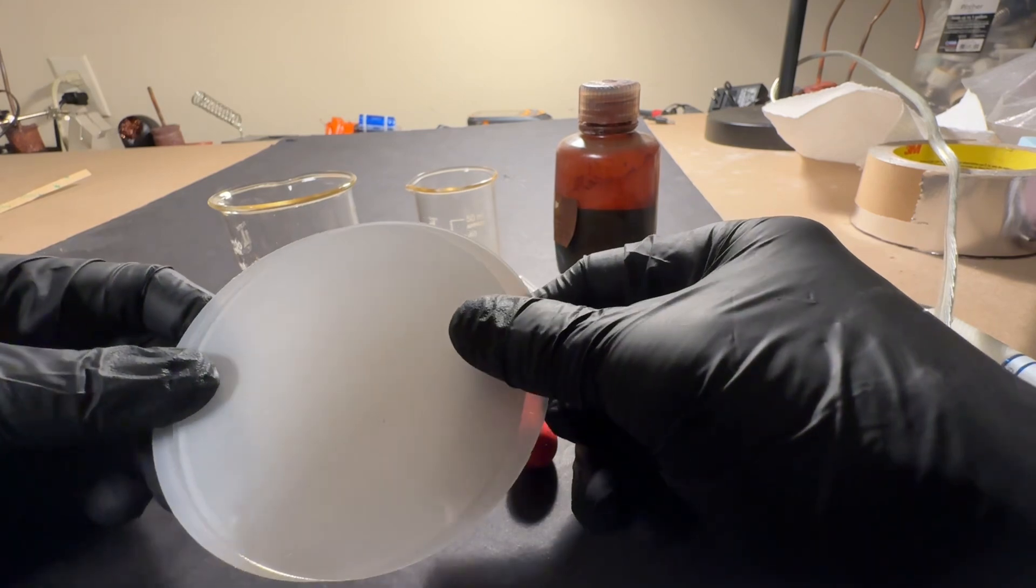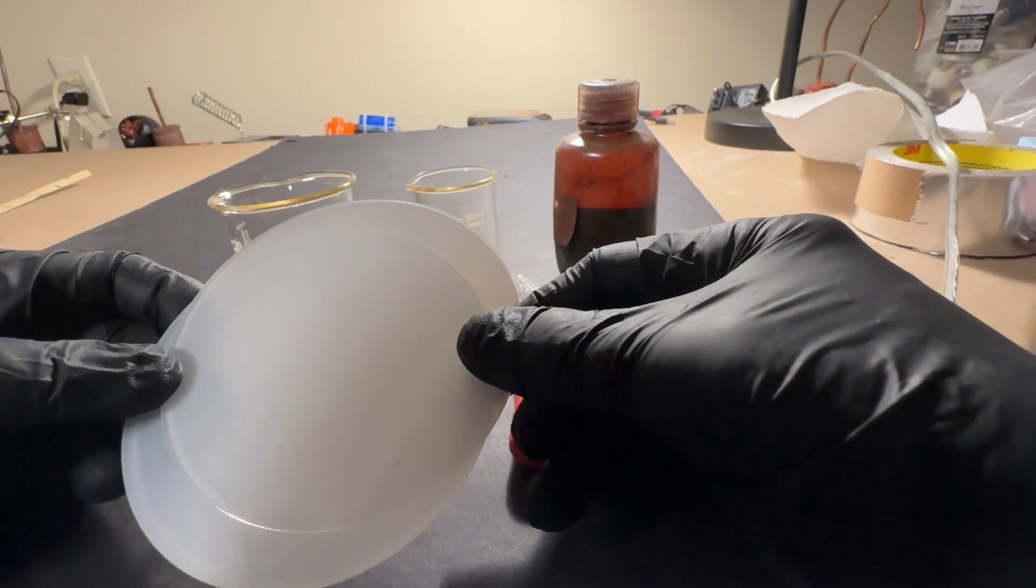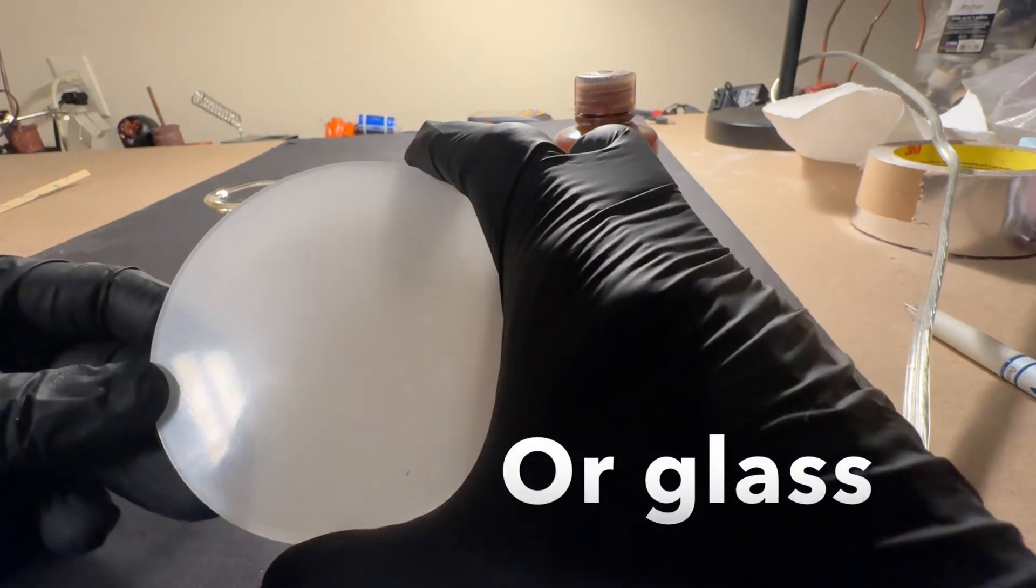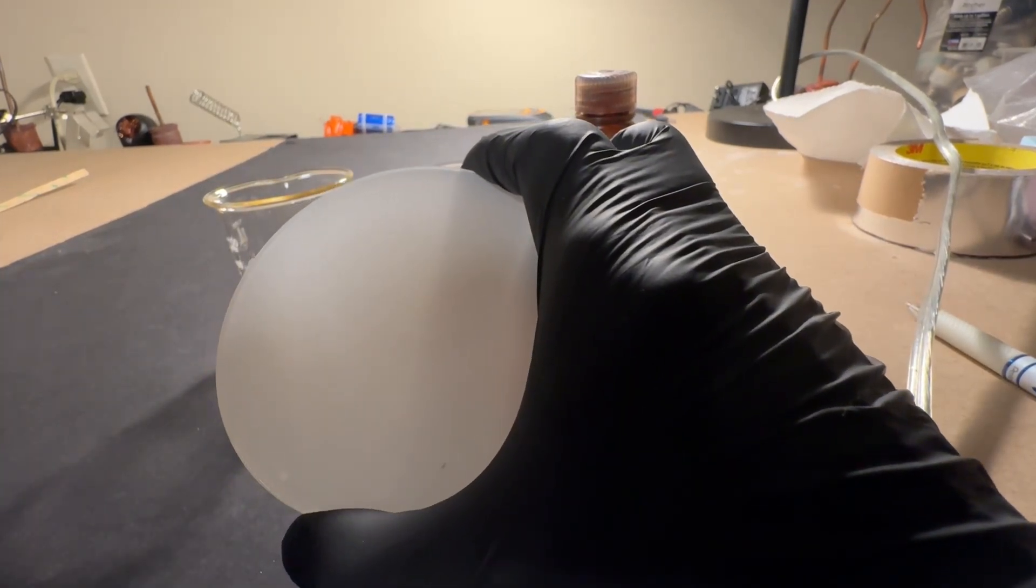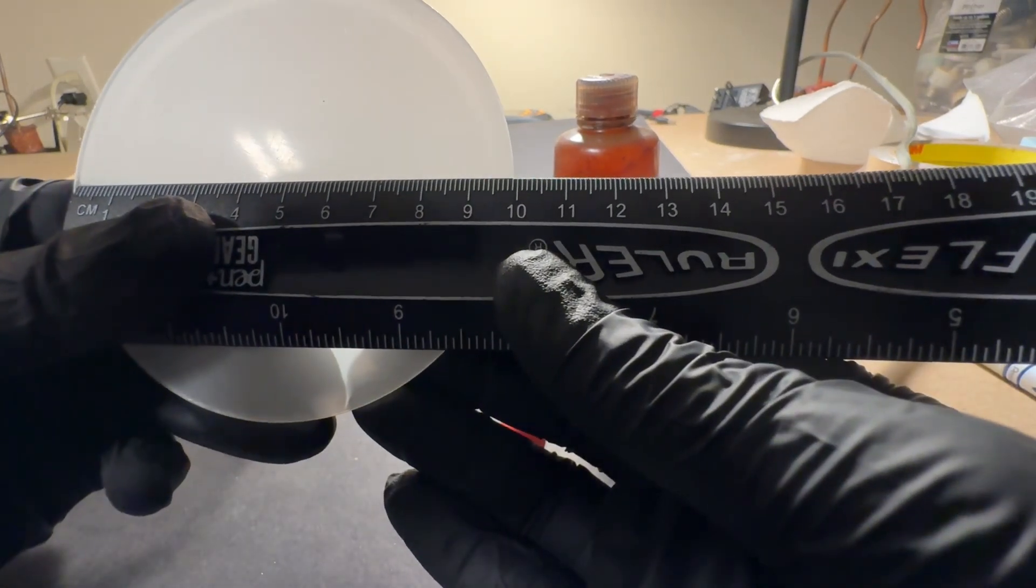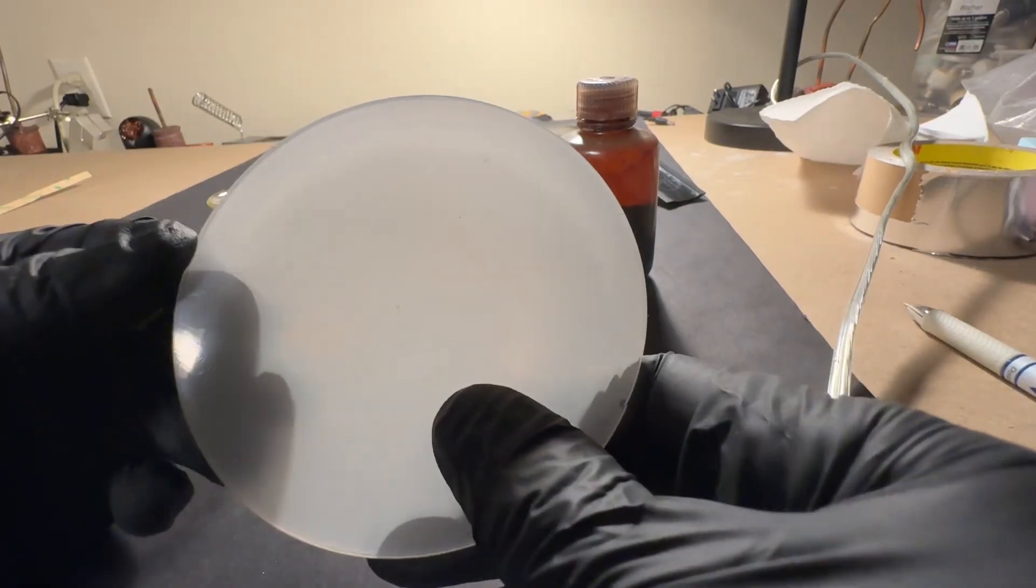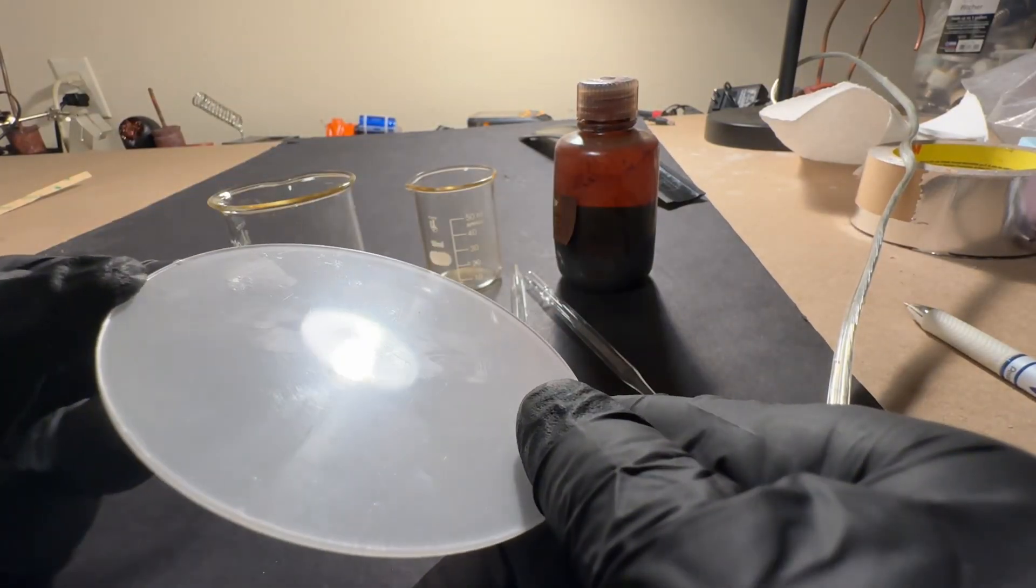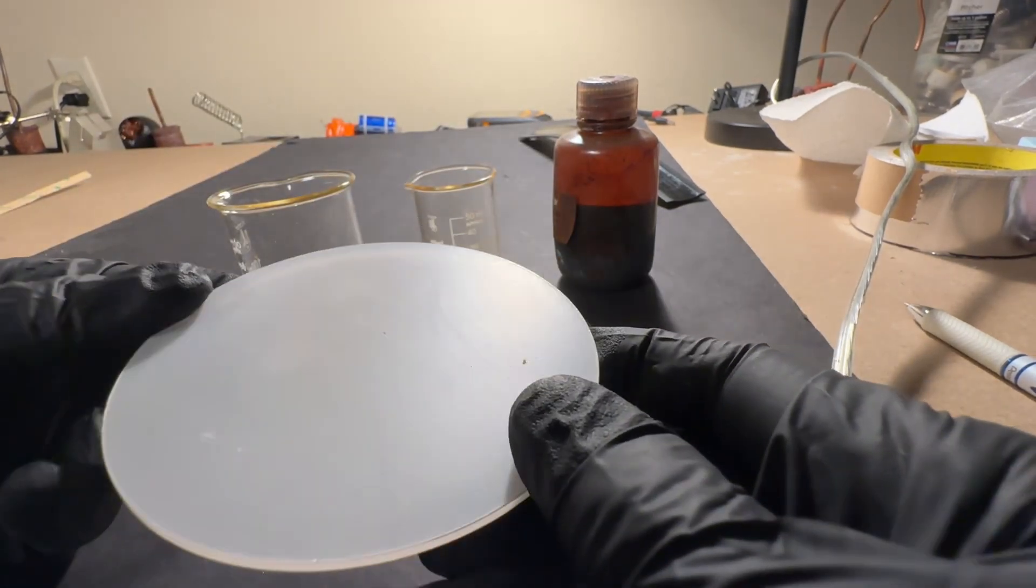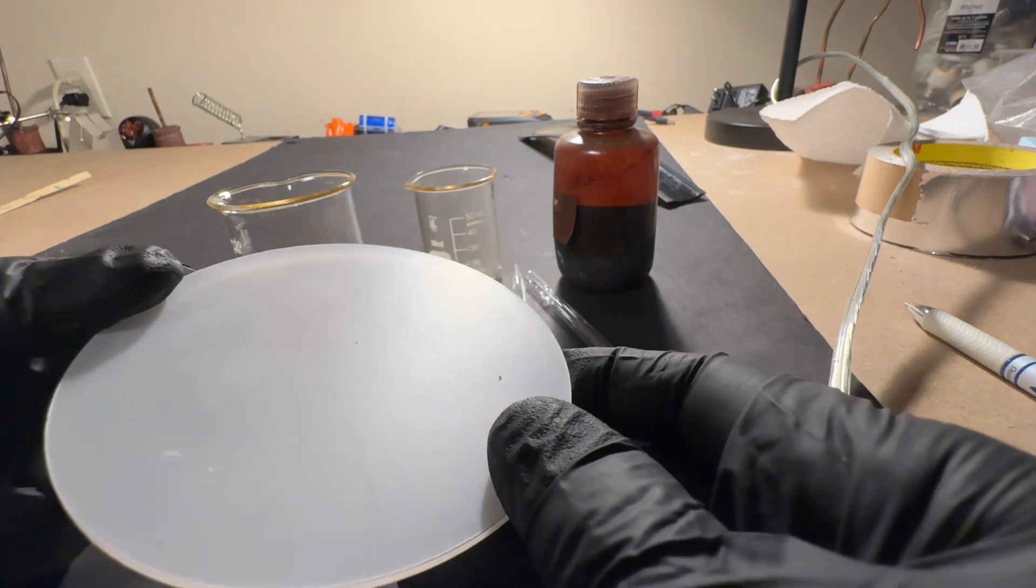What you need to start with is some plastic discs such as this. These are approximately 10 centimeters in diameter but you can use bigger or smaller discs depending on what you have available. These ones are polycarbonate but you can use pretty much any plastic as long as it doesn't dissolve in WD-40 because that's one of the components we're going to use.